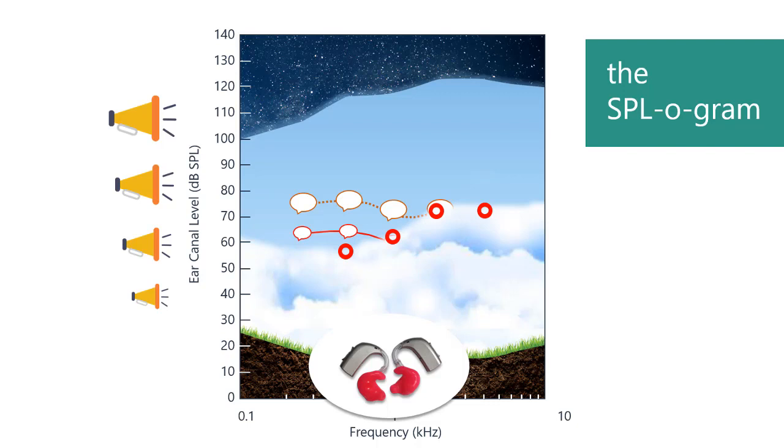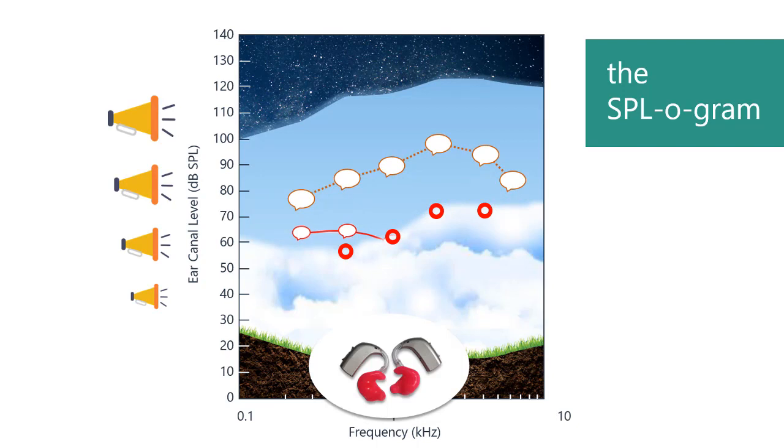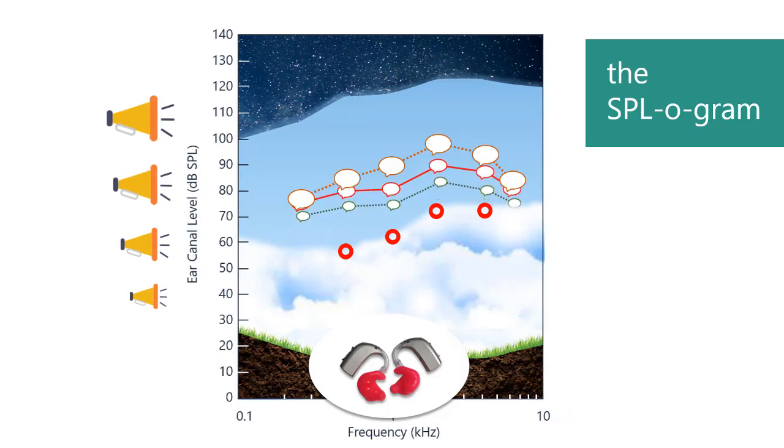Loud speech is amplified to hear well above the child's threshold of hearing. Average and soft speech is amplified here. Technology today allows for a very precise fitting of hearing aids to best help with each child's particular hearing loss.